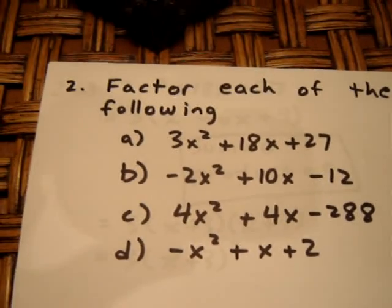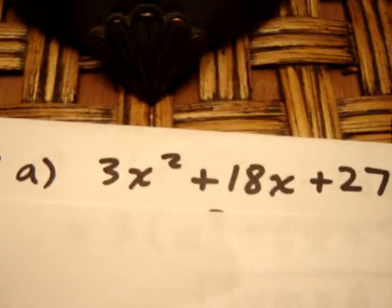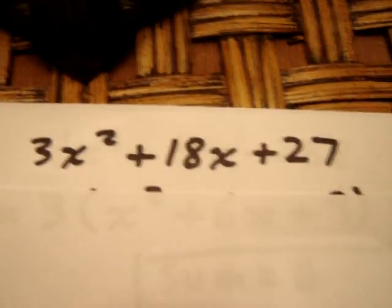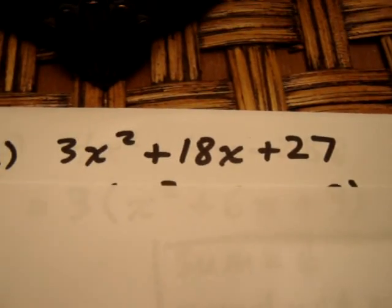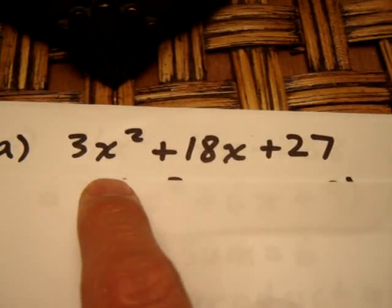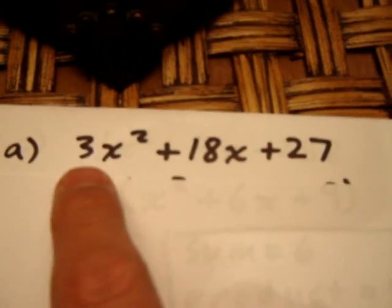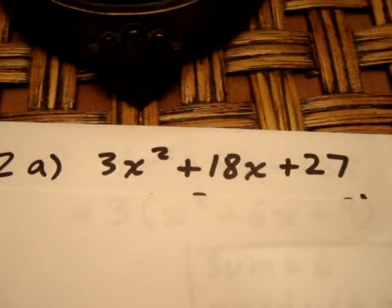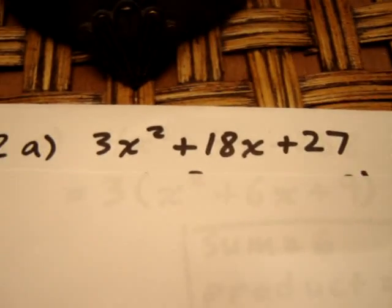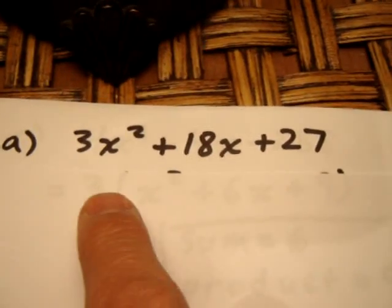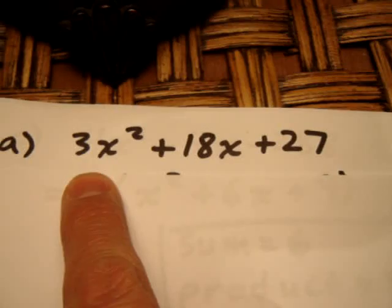If you're a little confused, let's take a look at the first question. The first question, 3x² + 18x + 27. We notice that we have degree two, degree one, and degree zero. But unfortunately, our leading coefficient is a three. Well, what we can sometimes do is see if this three will factor out of each term.